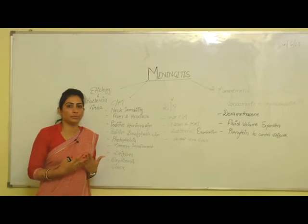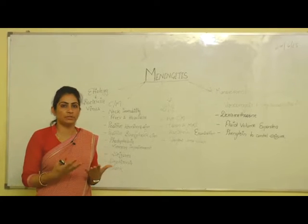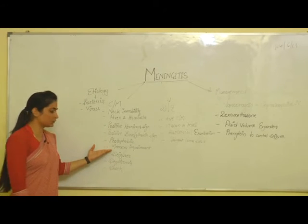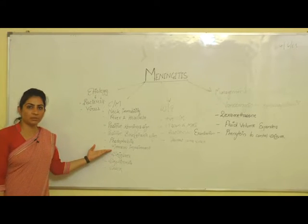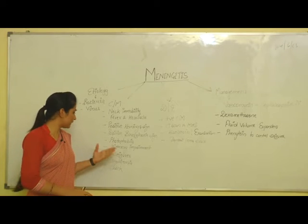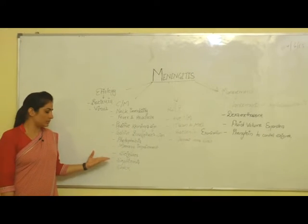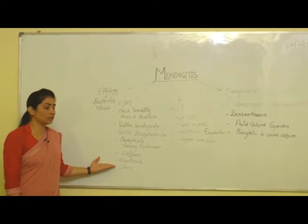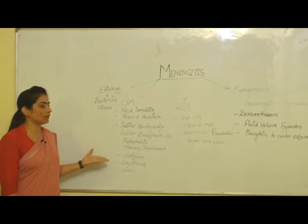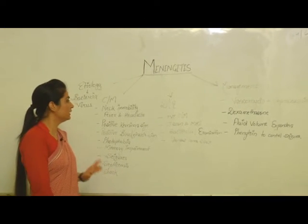The next manifestation is photophobia, which means the patient feels sensitivity to light. The next one is memory impairment — the patient cannot remember things properly. And the next ones are seizure, septicemia, and shock. These are all the clinical manifestations of Meningitis.